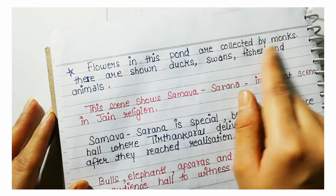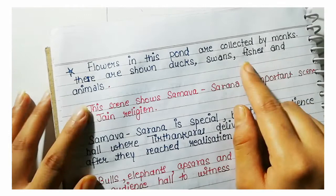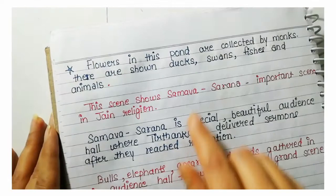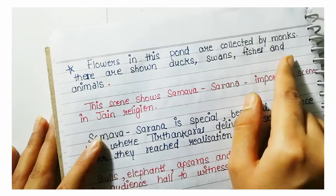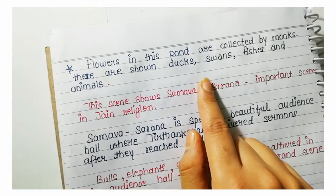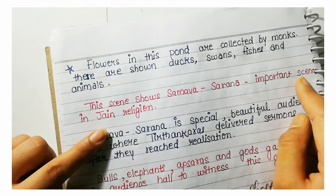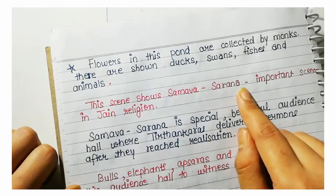Flowers in this pond are collected by monks. The scene shows ducks, swans, fishes, and animals. This scene depicts Samv Sarana, an important concept of Jain religion.